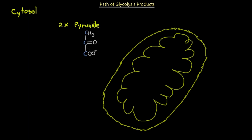What is the path of pyruvate from the cytosol? Here's the mitochondria inside the cell. Pyruvate could go into the mitochondria past the two membranes, or it could stay in the cytosol and not enter the mitochondria. What distinguishes the two processes is the presence of oxygen.